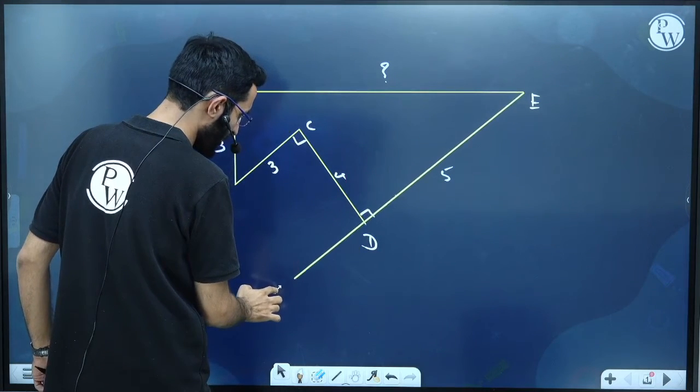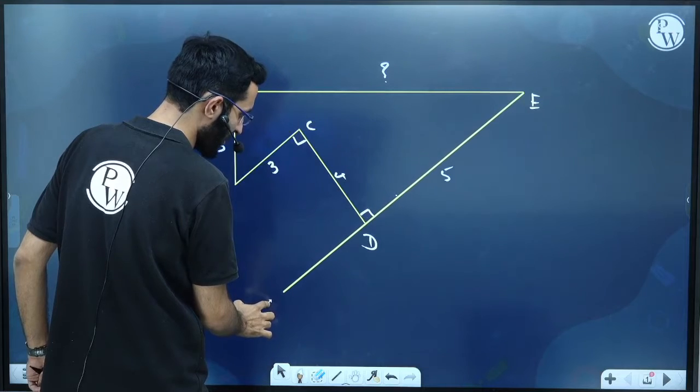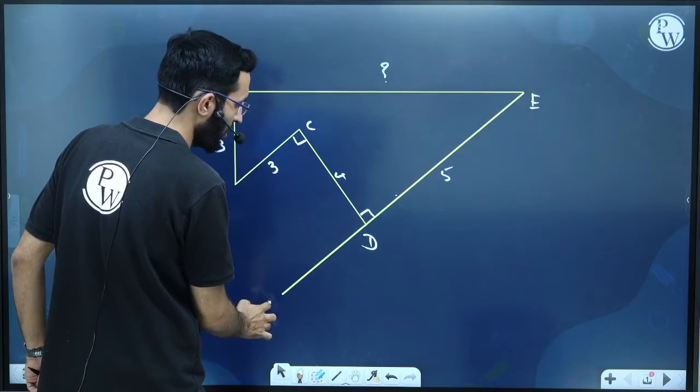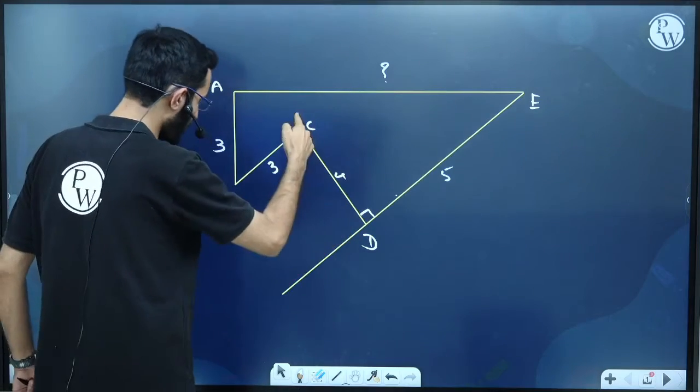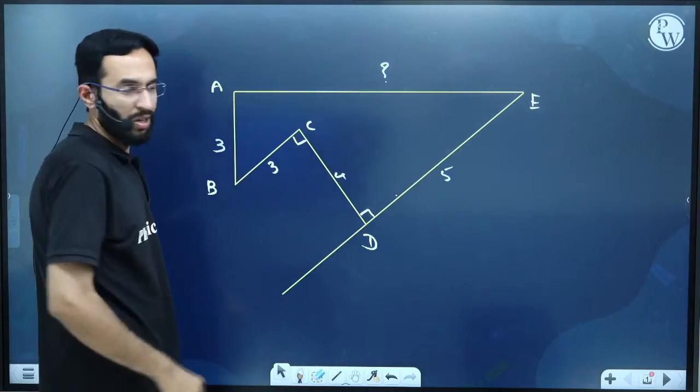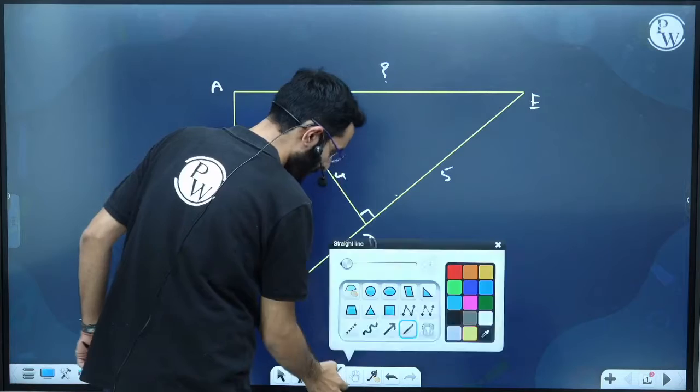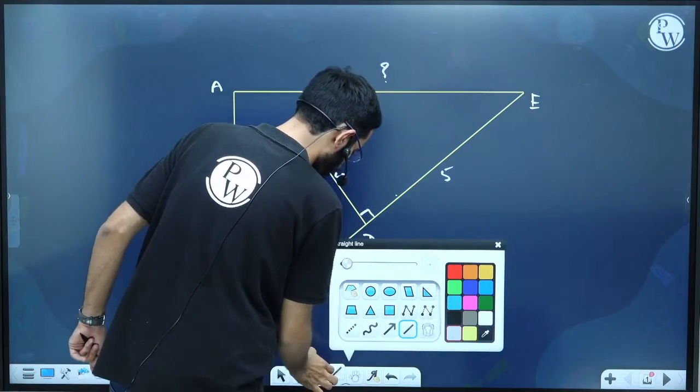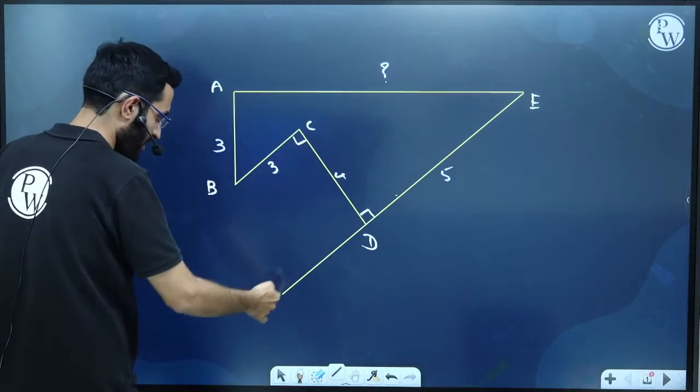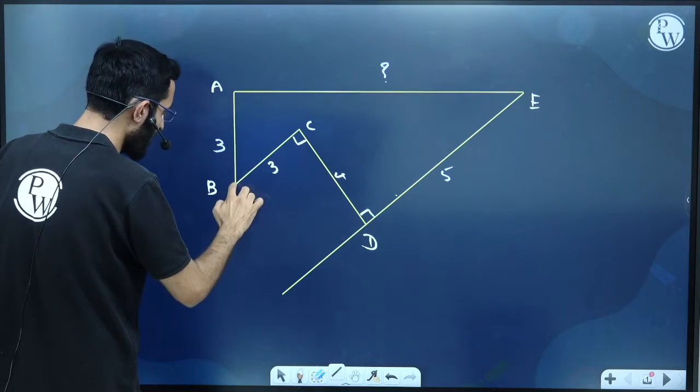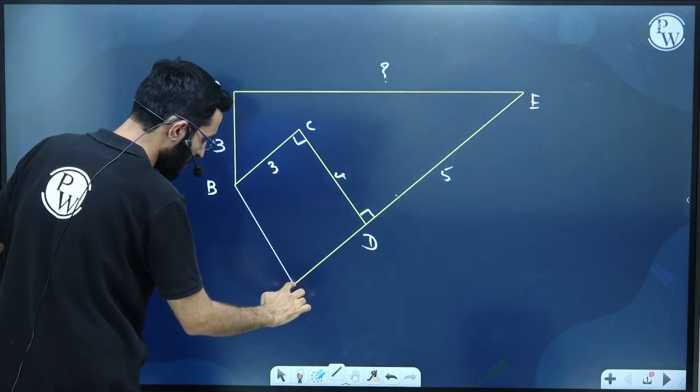Little bit towards this side. Please understand this carefully. Similarly, this CD is perpendicular to both lines. Now, can I draw one line which is perpendicular to both lines BC and extended ED line from B?